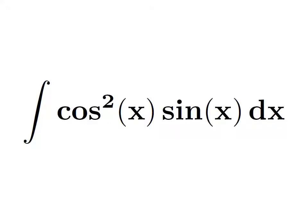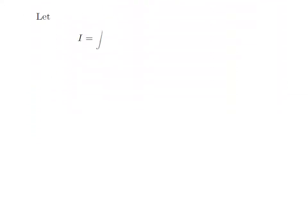In this video, we will learn to find the integral of square of cosine of x into sine of x. Let i be equal to the integration of square of cosine of x into sine of x with respect to x. To simplify this integration, let's apply the substitution method.